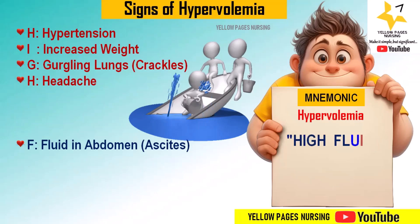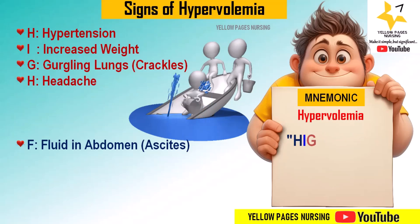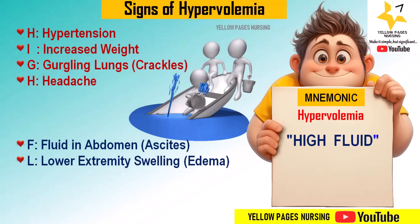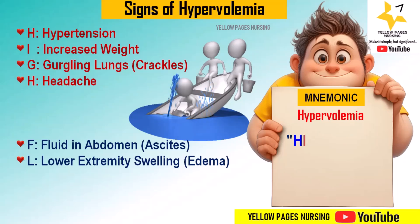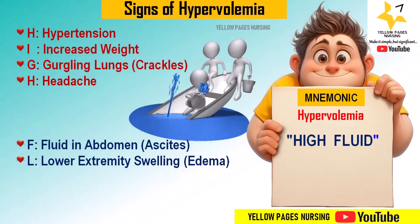F stands for fluid in the abdomen, that is ascites — accumulation of fluid in the abdominal cavity causing abdominal swelling. L stands for lower extremity swelling, that is edema — swelling particularly in the legs, ankles, and feet.